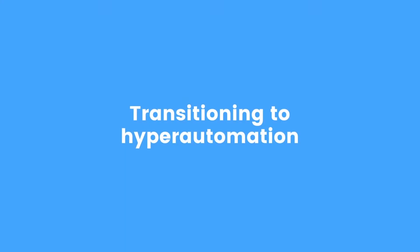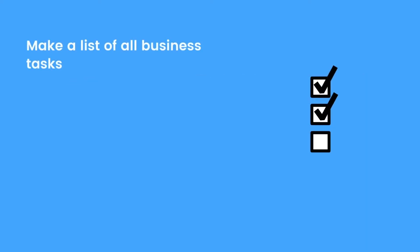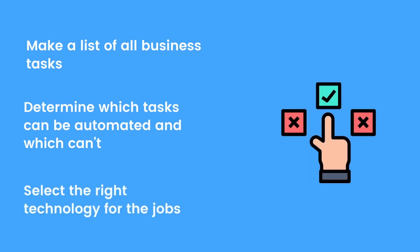So how does a business transition to hyper-automation? To start, businesses need to understand what tasks are suitable for automation and which ones require human intervention. The first step is to make a list of all business tasks, then determine which tasks can be automated and which ones can't, and then select the right technology for the jobs.